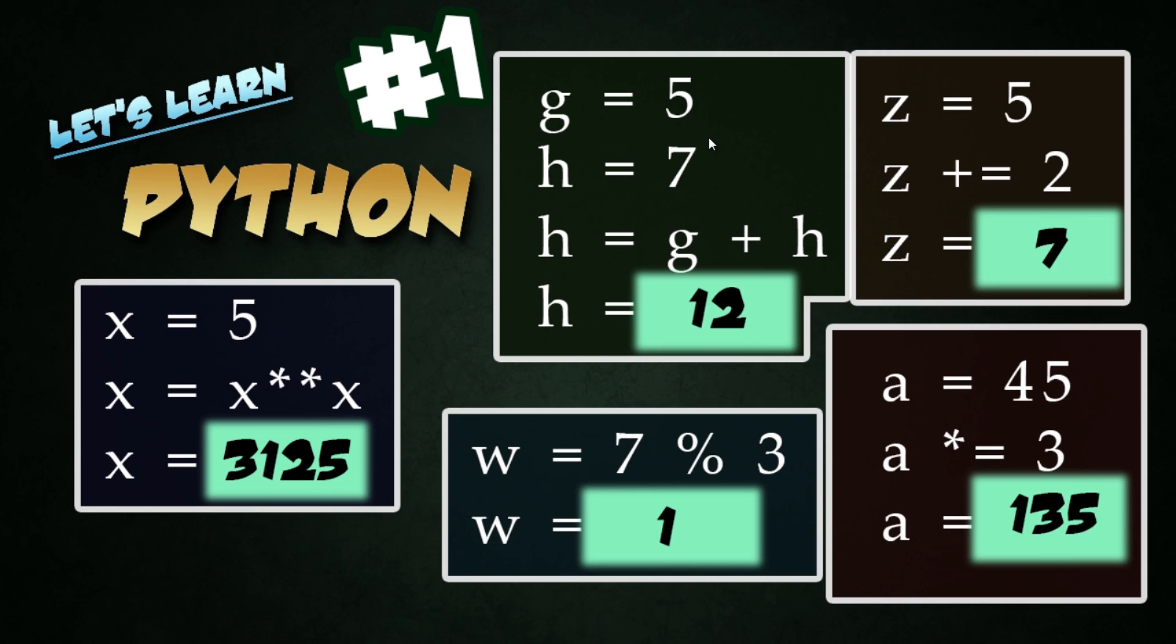Next on the middle one, we have g equals 5, h equals 7, and it's simply re-entering that value in to h to make the total value be 12, because we're just adding them together. Next we have a percent sign. This is called the modulo operator, used to find a remainder between two numbers.